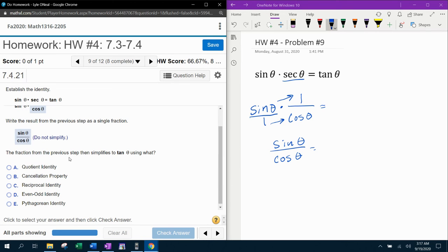The fraction from the previous step then simplifies to tangent theta using what? Now you're going to have to know what that identity is called. Well, it's definitely not the cancellation property. Sine over cosine is tangent. That's not an even-odd property. It's not a Pythagorean identity. Do you see what I'm doing? I'm doing the process of elimination.